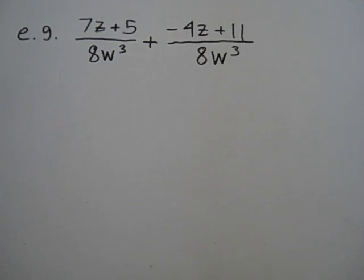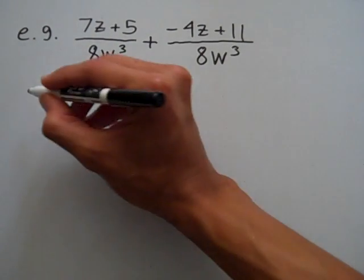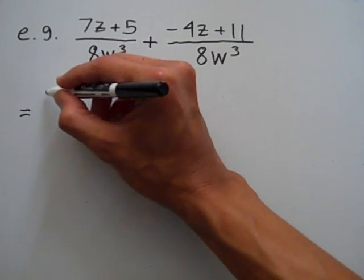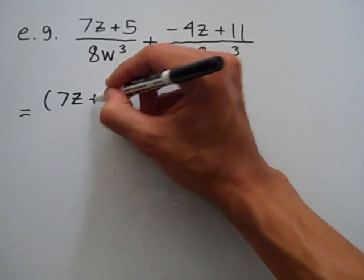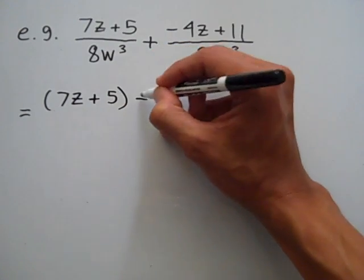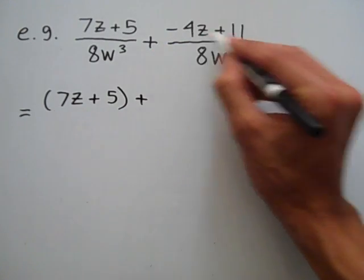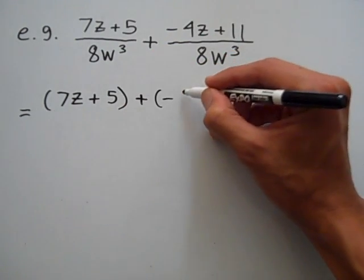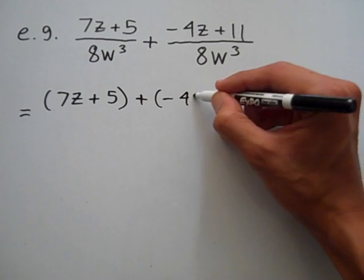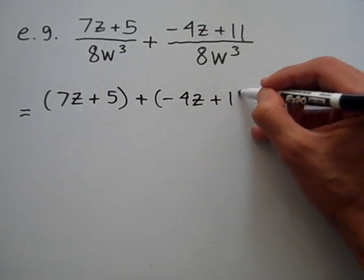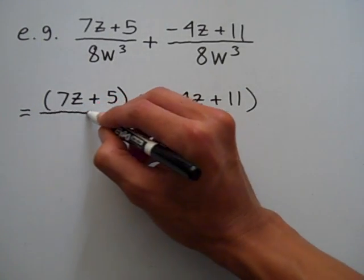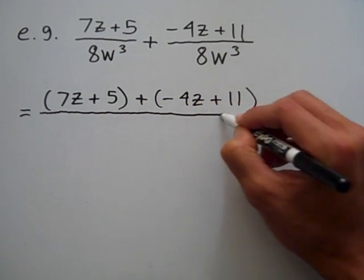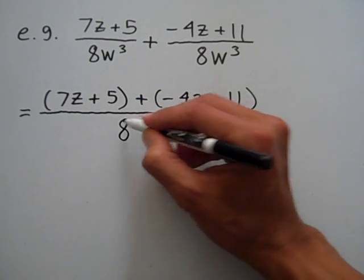To add these two fractions, they've got the same denominators which makes it easy, so I simply add the numerators. I'm going to have 7z plus 5 plus this numerator, so that's plus negative 4z plus 11, and I keep the common denominator which is 8w cubed.